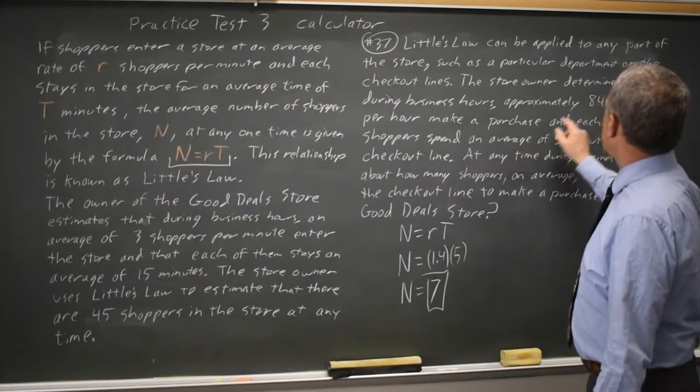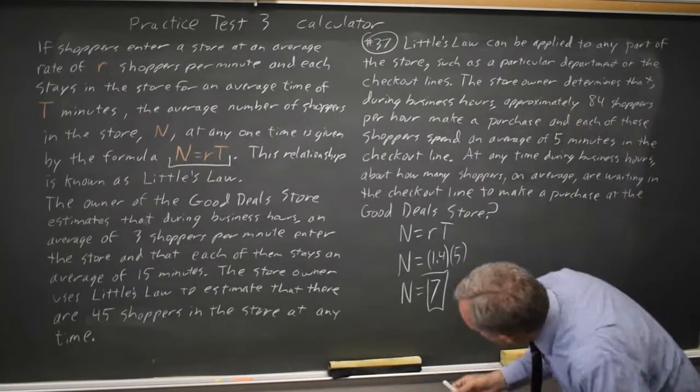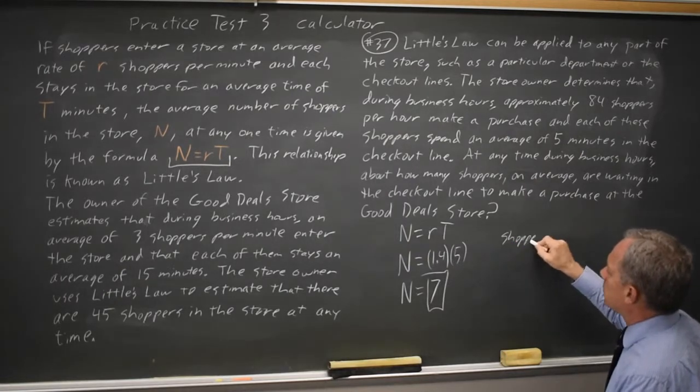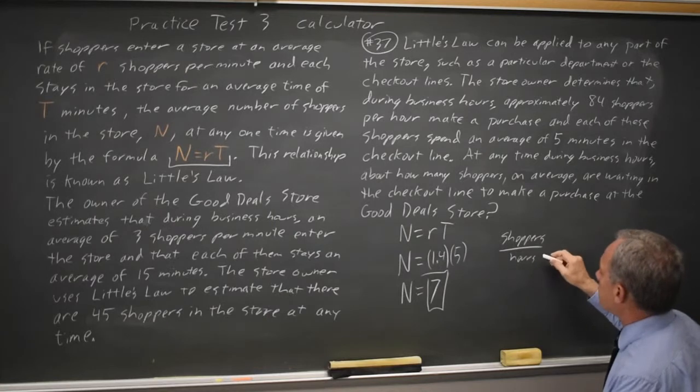Over here, the 84 was shoppers per hour, so we had to divide by 60, because shoppers per hour means shoppers over hours, but we want shoppers per minute.